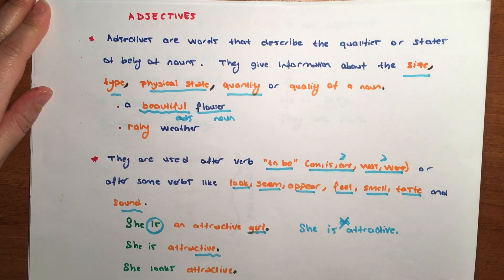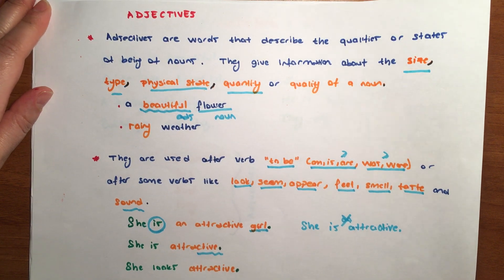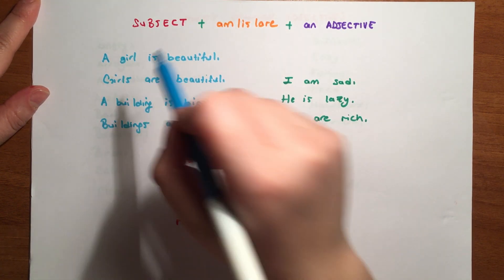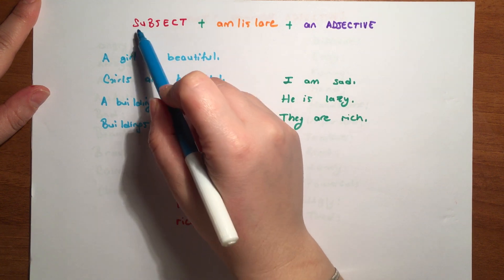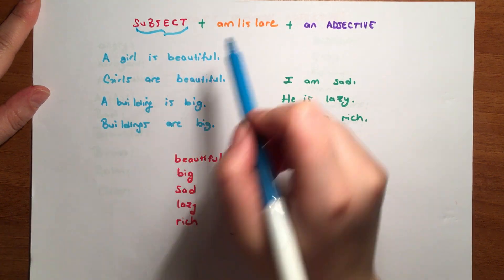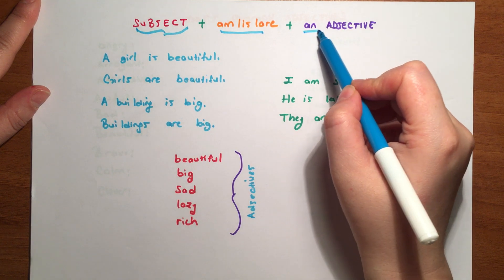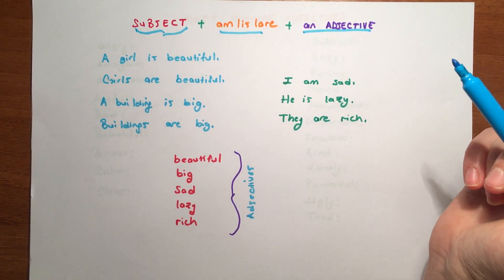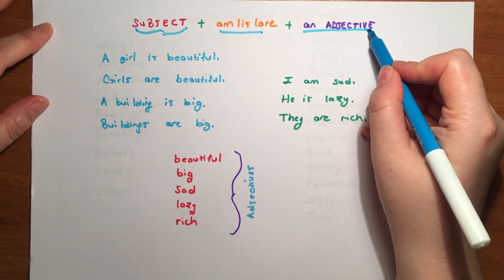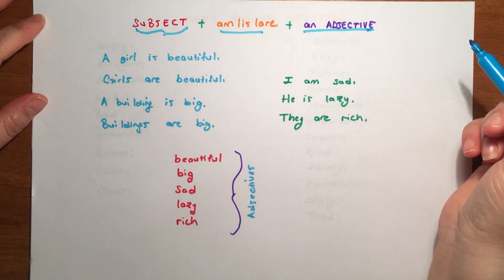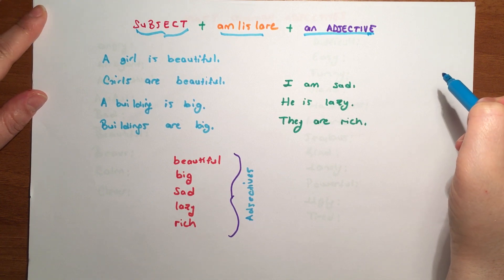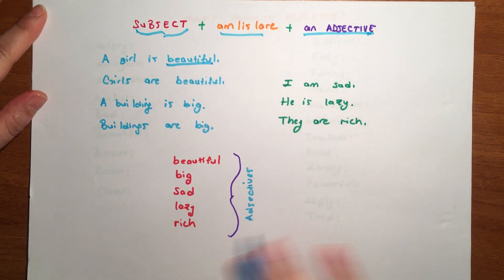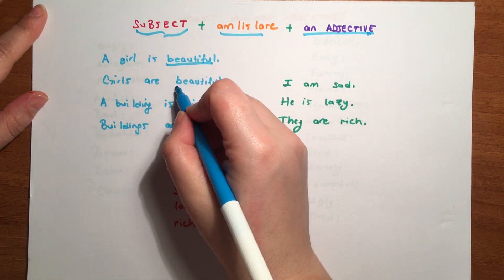She is attractive. She looks attractive. We can use the verb to look, meaning she looks attractive. Let's see clearly on this page. As we said before, we use subject plus am, is, are, and after that you can use an adjective. What are we doing? We said subject, am, is, are, or was, were in the past, and we use an adjective right after.